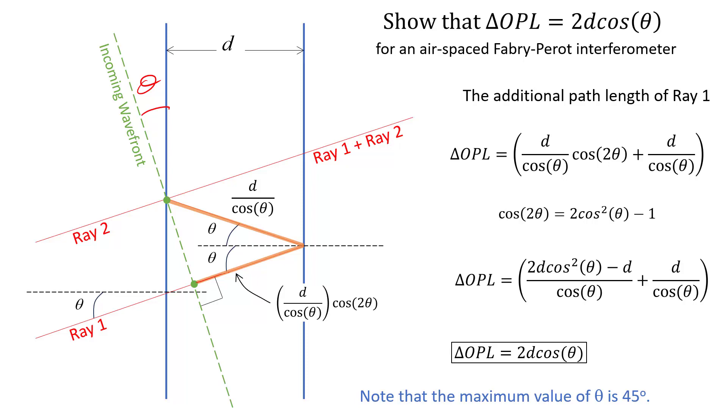Okay, that's the origin of delta OPL equal to 2d cos theta that I was asked about.